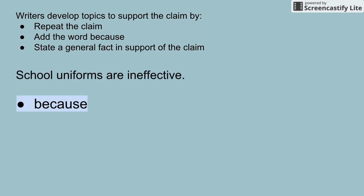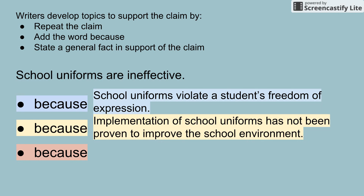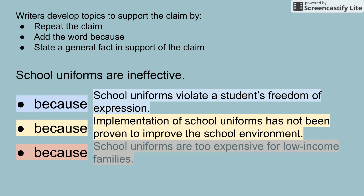So now I have three topic sentences: school uniforms are ineffective because school uniforms violate a student's freedom of expression; school uniforms are ineffective because implementation of school uniforms has not been proven to improve the school environment; school uniforms are ineffective because school uniforms are too expensive for low-income families. I have three topic sentences that are general and they support my claim.